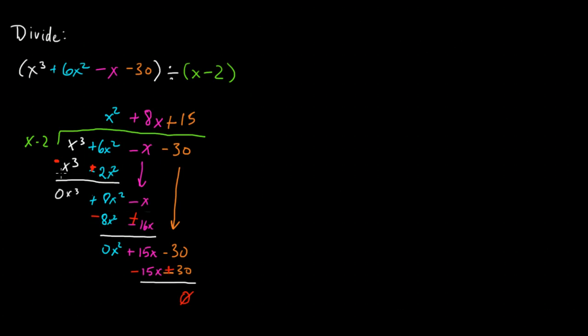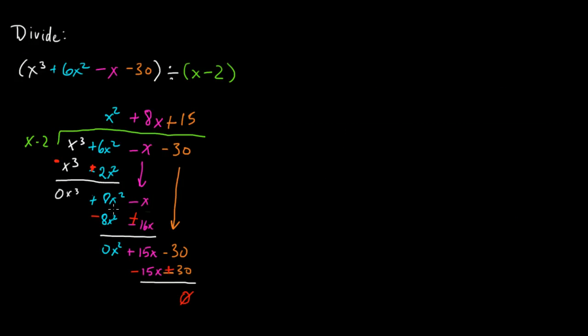The subtract part means to add the opposites, so I put the opposite signs in red, and then you just add straight down. x cubed plus a negative x cubed is 0x cubed, 6x squared plus 2x squared is 8x squared, and then you bring down the next term, which is our negative x, bring that down,